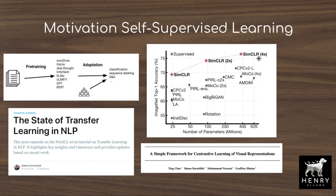The SimCLR 4X model surpasses the supervised learning baseline on ResNet-50, where 4X is the width multiplier. In this paper, MoCo V2 achieves about 71% accuracy on the same fair ResNet-50 model, without the width multiplier bias that would favor wider, higher-parameter models when comparing supervised to unsupervised learning.